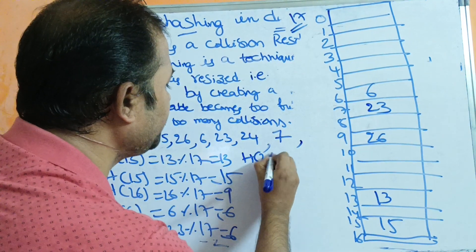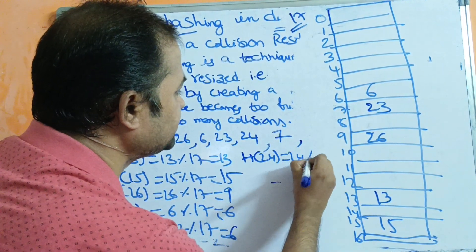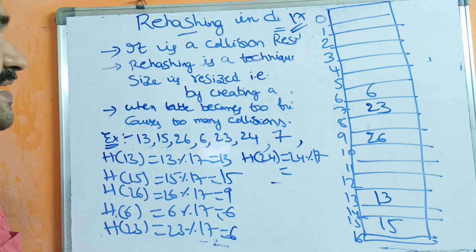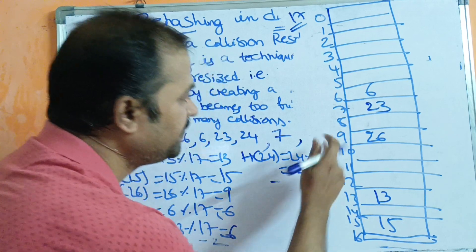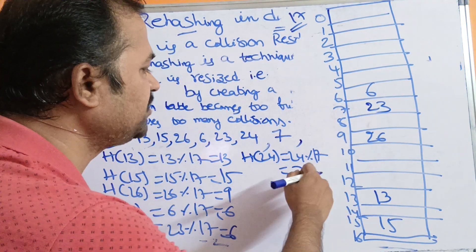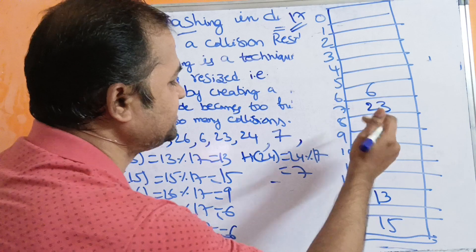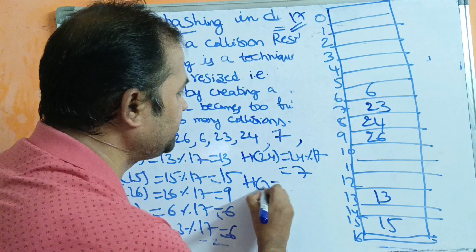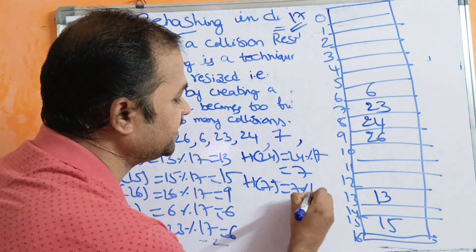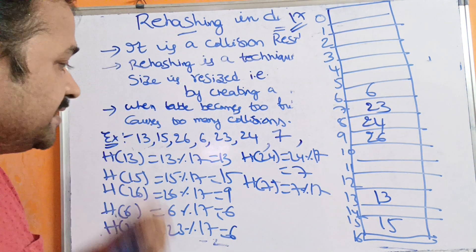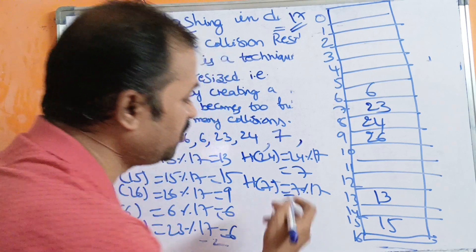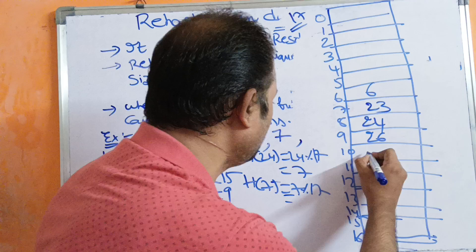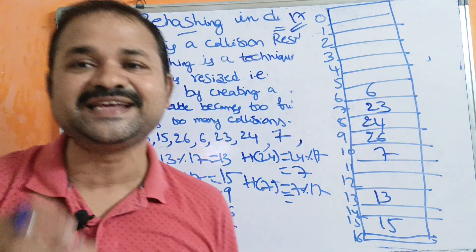H(24) = 24 modulo 17 = 7. But location 7 is already occupied, so we store 24 at the next location, index 8. Then H(7) = 7 modulo 17 = 7. Location 7 is occupied, 8 is occupied, 9 is occupied, so we store 7 at index 10. This is rehashing.